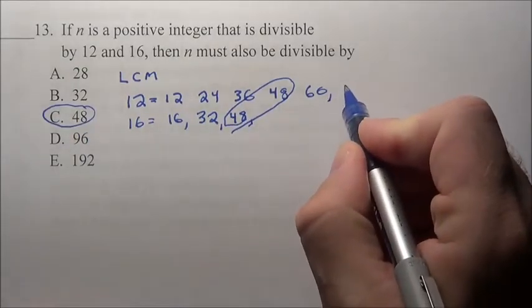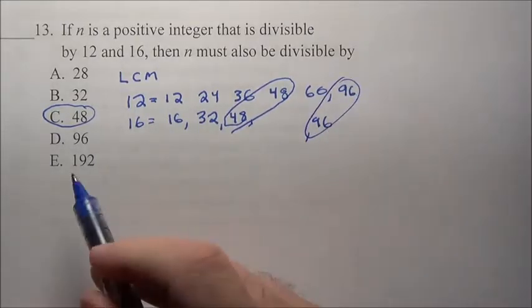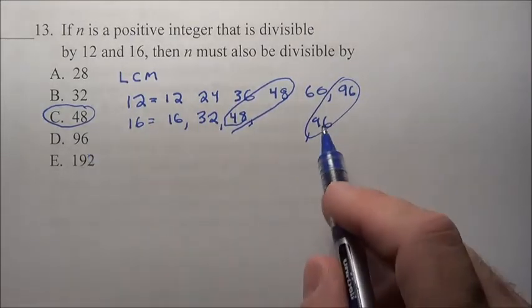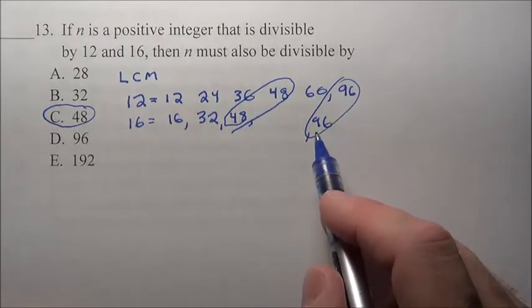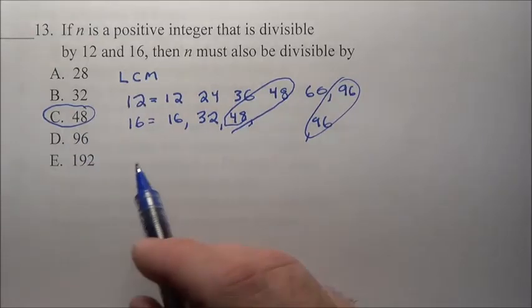Now if we kept going, we would see they have another common multiple at 96. But that answer is not going to work, just because it's divisible by 12 and 16 doesn't mean it's divisible by 96.